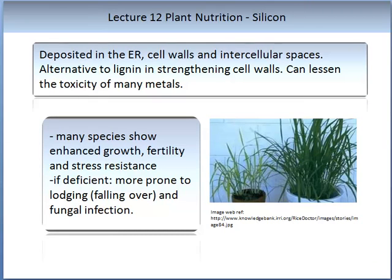Silicon is deposited in the ER, cell walls and intracellular spaces. It is used by plants as an alternative to lignin in strengthening cell walls, can lessen the toxicity of many metals, and many species show enhanced growth, fertility and stress resistance. If silicon is deficient, plants are more prone to lodging and falling over, and to fungal infections.